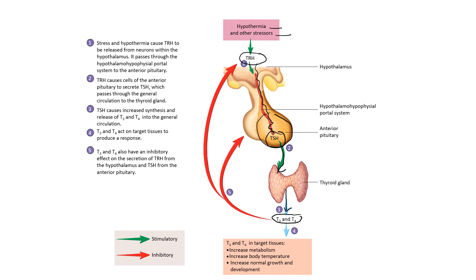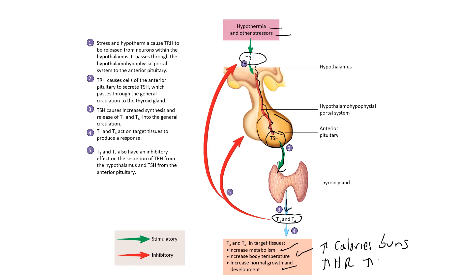The effects of T3 and T4 throughout the body include an increase in metabolism of organs, increased body temperature, increased growth and development, increased calories burned, increased heart rate, and increased blood pressure.